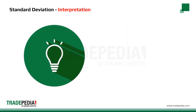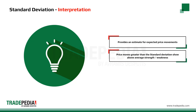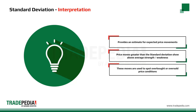Standard deviation provides an estimate for expected price movements and hence the risk of a security. Price moves greater than the standard deviation show above average strength or weakness. These moves are used to spot overbought or oversold price conditions.